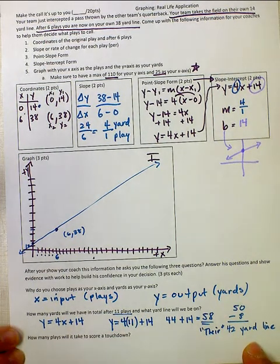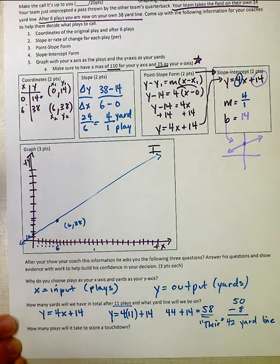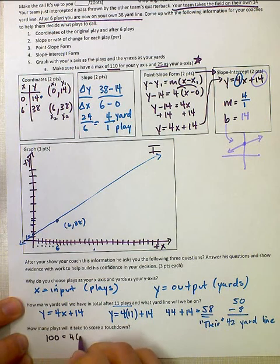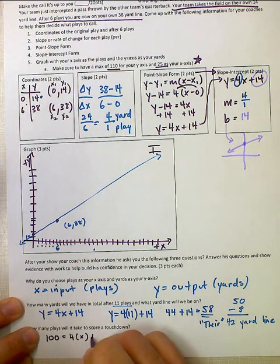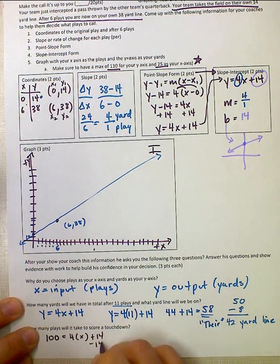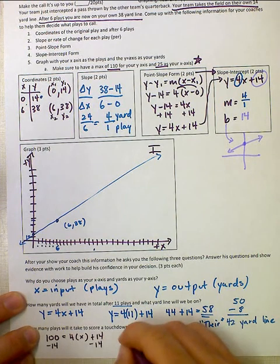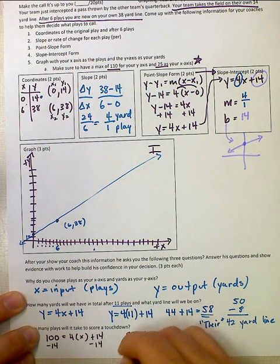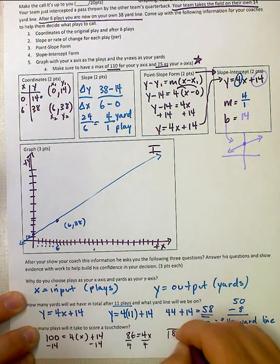How many plays will it take to score a touchdown? Well, we're looking for an output of 100 yards for that to be a touchdown. So we're looking for how many plays. I could subtract 14. I could get 86 is equal to 4x. Divide by 4, divide by 4.